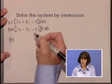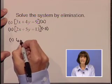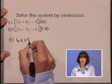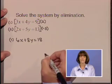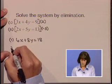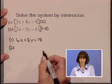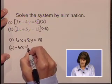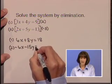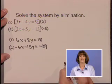Equation 1, as we multiply through by 2, becomes 6x plus 8y equals 18. Equation 2 then becomes negative 6x minus 15y equals negative 39.